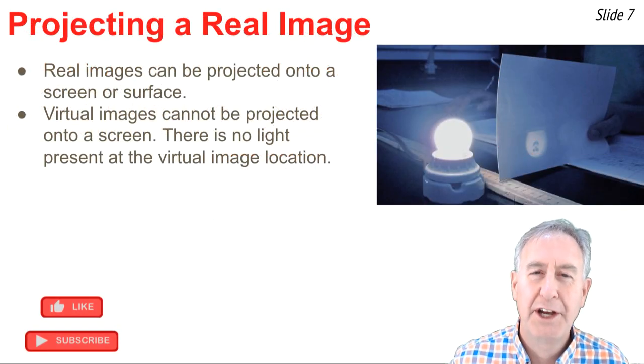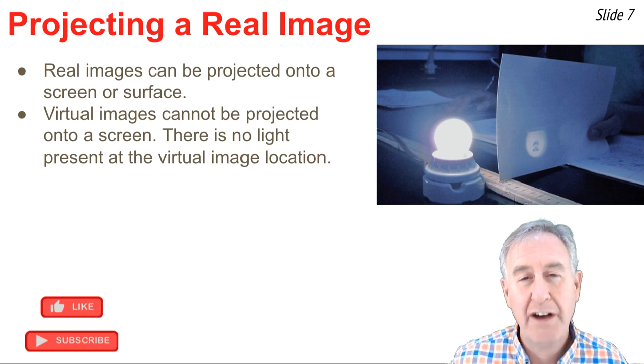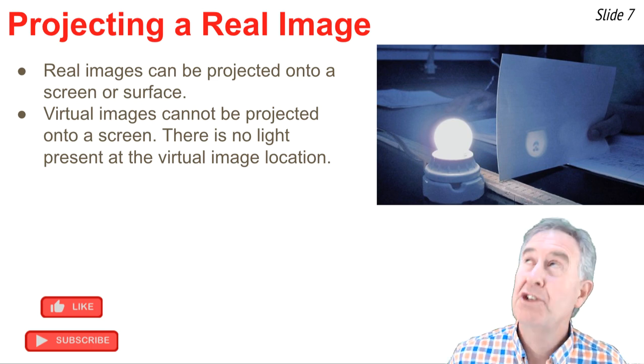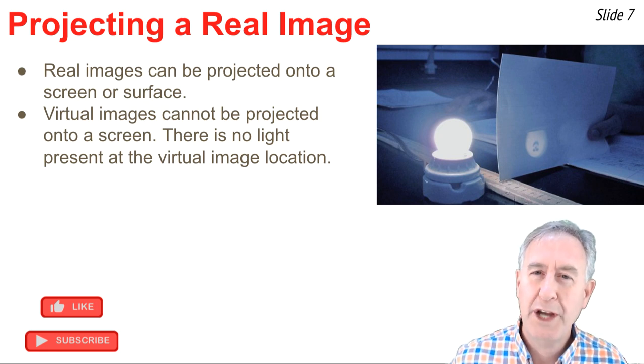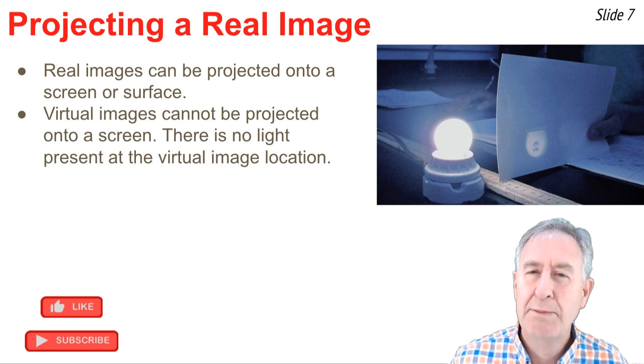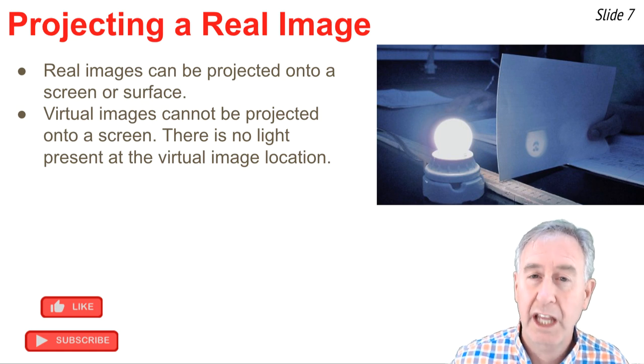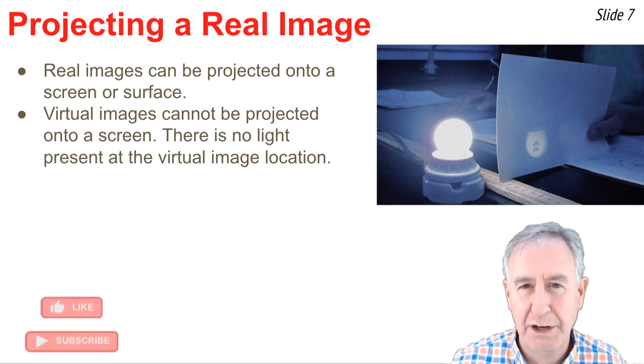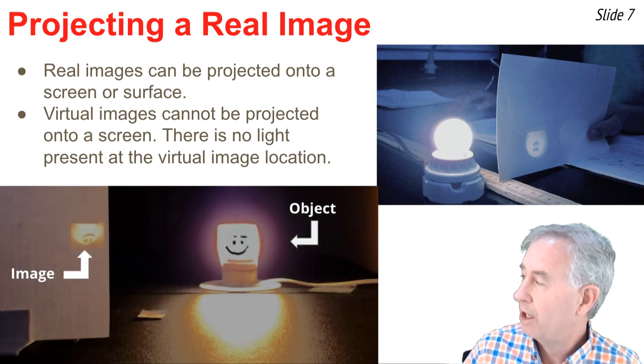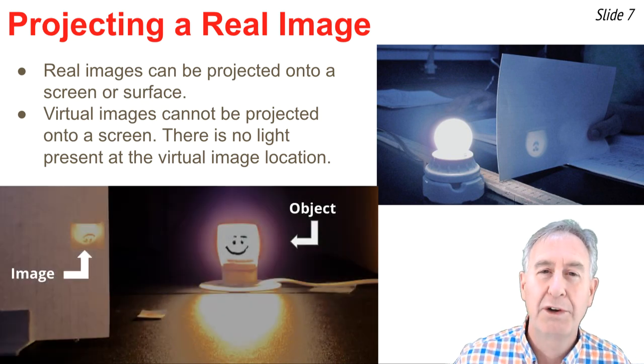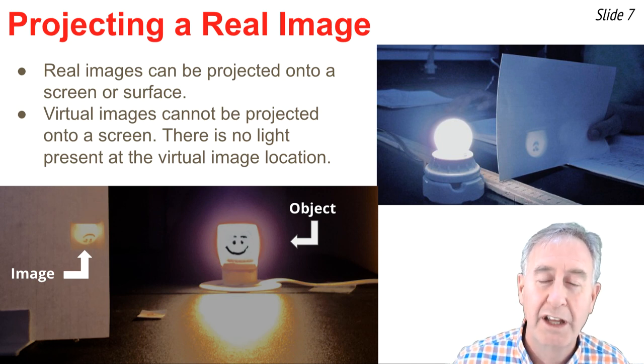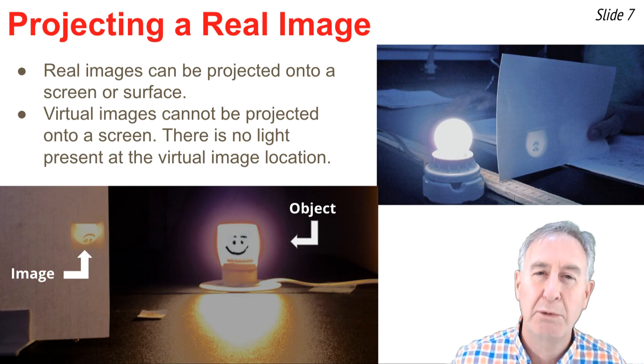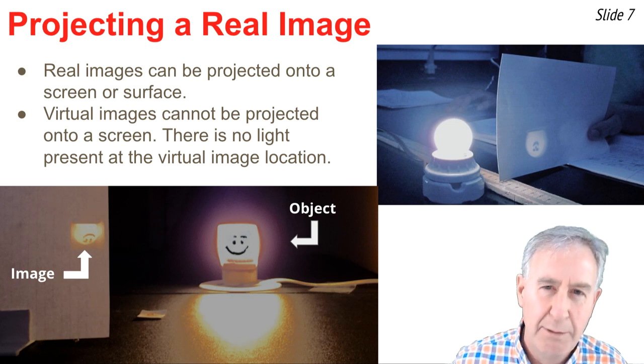Real images can be projected onto a screen or paper. It's often done in a physics lab. As you see above, there's a light bulb with a smiley face on it, and the image of that light bulb is projected onto a note card. This is because it's a real image. Light is present at the image location so you can focus that image onto a screen. The same thing is shown here at my right. You'll notice that there's an object with a smiley face on it and an image projected onto a note card. Real images are projectable because light lands at the image location.